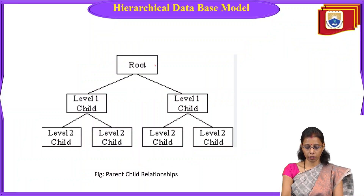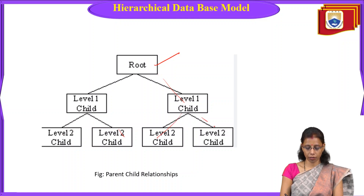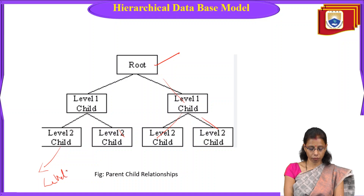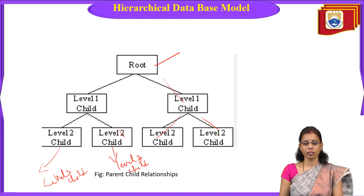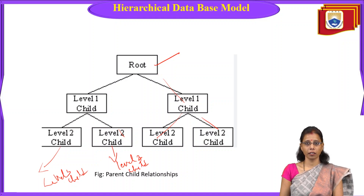From the root, we have Level 1 children. Under those, we have Level 2 children, and further down Level 3 children, and so on — keep classifying from the top to the branches, from the main root to the sub-branches. This tree-like structure is also known as the parent-child relationship.